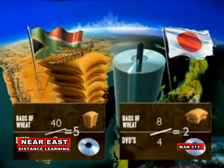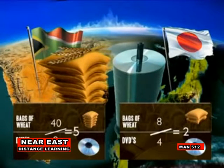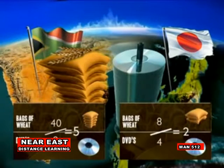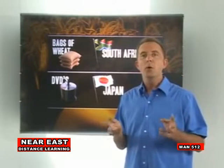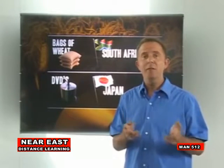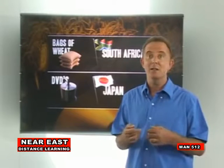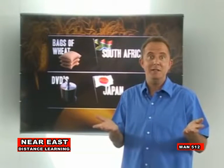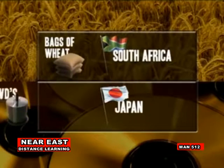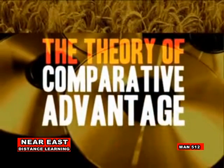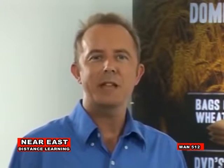Comparing the cost of production in both countries, South Africa has to give up 5 bags of wheat for each DVD it makes, while in Japan it only costs 2 bags of wheat to make one DVD. DVDs cost more in terms of bags of wheat given up in South Africa — it's cheaper for Japan to make DVDs. So Japan should make the DVDs, and it makes sense that South Africa should produce the wheat. And that's the theory of comparative advantage. Don't let the numbers confuse you — they're just used to help understand the theory.